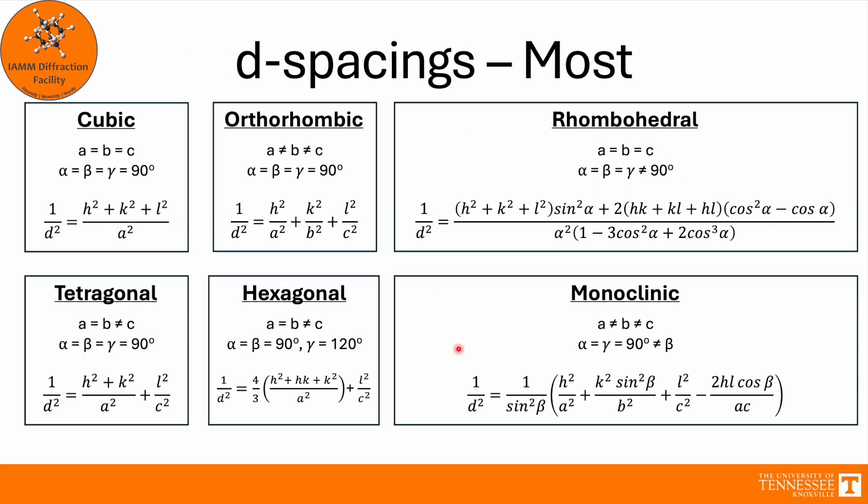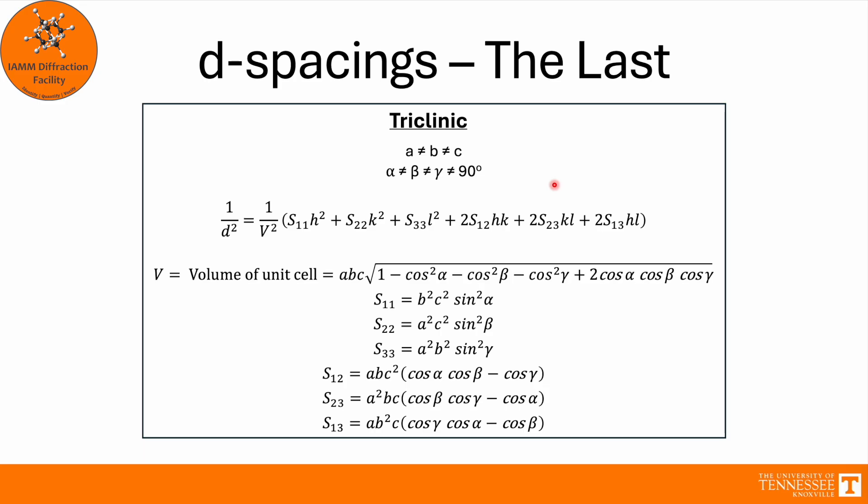Here you see the d-spacings for most of the crystal systems. We already went over cubic, tetragonal. You see once we hit orthorhombic where a does not equal b does not equal c, all three of the indices are split apart with their respective lattice parameters. Hexagonal, things get a little bit more complicated because our gamma is no longer 120. And then once we start hitting rhombohedral and lower symmetry, things get a lot more complicated. It's not quite so easy to calculate out the d-spacing. And then once we hit the triclinic crystal system, it gets incredibly complicated.